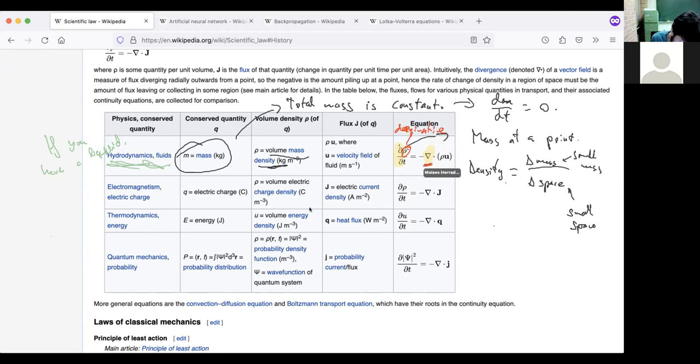So there's a derivative in that formula, but also the thing we're taking the derivative of is a derivative. And this is also a derivative, which is sort of telling us that if the mass at a point is changing, it means it's going somewhere. That is what this law is saying.